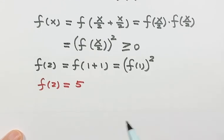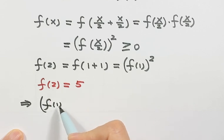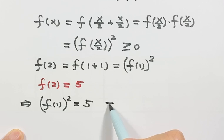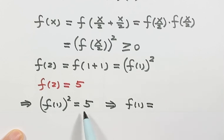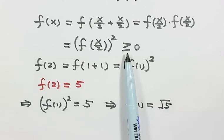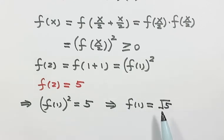Then we have f(1) squared equals 5. So we want to know what is f(1), then both sides take a square root. Then we have f(1) equals square root of 5. The reason we only keep a positive value is because at the beginning we already proved that f(x) is bigger than or equal to 0. So that's why we only keep the positive value.